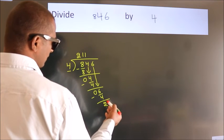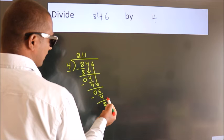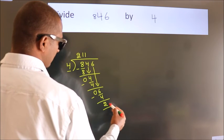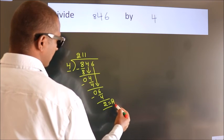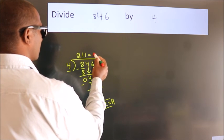After this, no more numbers to bring it down. So we stop here. This is our remainder. This is our quotient.